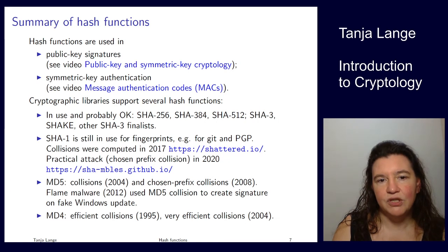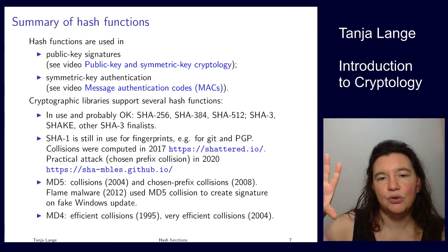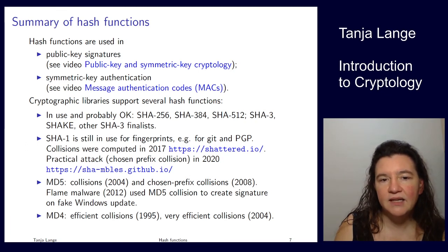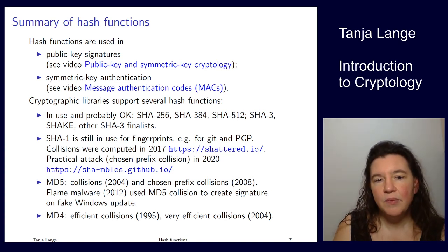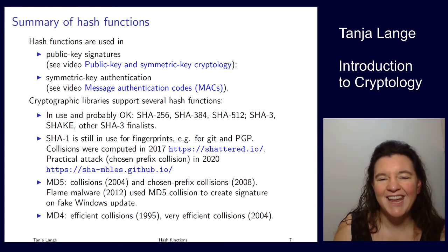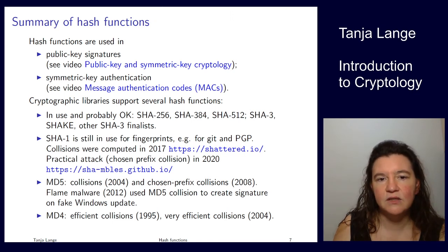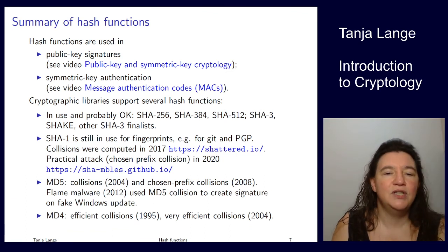A more practical attack is called a chosen-prefix collision attack, which means any desired prefix can be turned into a colliding pair. That attack was demonstrated just earlier this year, making SHA-1 really insecure and not to be used. Something similar happened earlier with MD5, which until 2004 was one of the most widely used hash functions. There had been a warning as early as 1995 noting some dodgy properties in MD5, and in 2004 collisions were found.